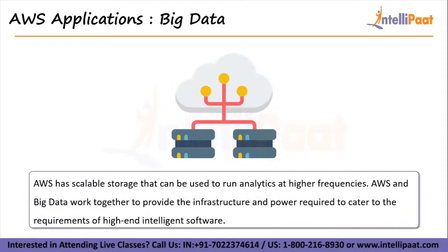Big Data. AWS has scalable storage that can be used to run analytics at higher frequencies. With AWS, you can build an entire analytics application to power your business. You can scale a Hadoop cluster from zero to thousands of servers within just a few minutes and then turn it off when you're done. This means you can process big data workloads in less time and at a very low cost.